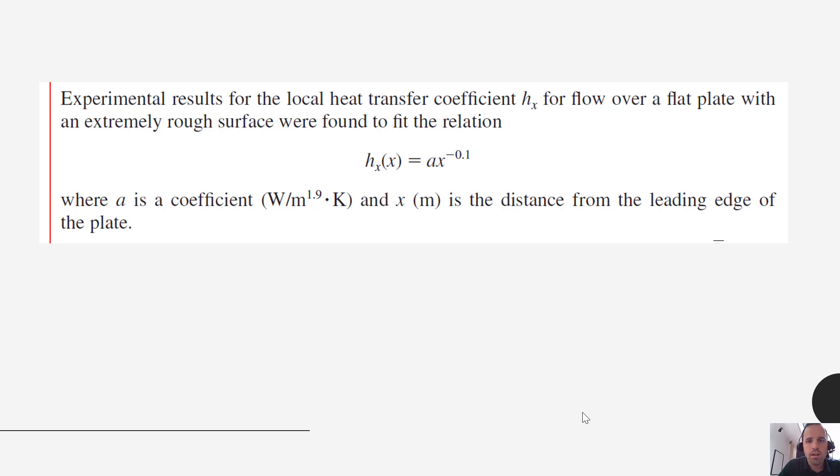So a is just a coefficient empirically determined - somebody ran an experiment and they figured out here's how h changes with respect to x. And x is the distance from the leading edge of the plate.